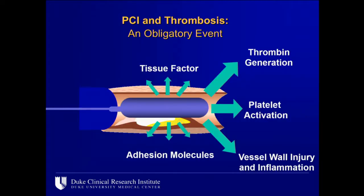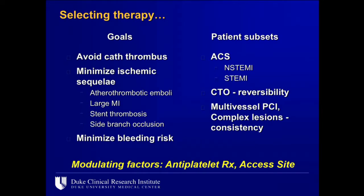The reason we need to worry about this is that what happens in the cath lab is iatrogenic plaque rupture. When you inflate the balloon and crack the plaque, there's thrombin generation, platelet activation, vessel wall injury, and inflammation. We treat vessel wall injury and inflammation with a stent. Platelet activation is addressed with P2Y12 inhibitors — inhibitors of platelet activation — while 2B3A inhibitors address platelet aggregation. And then there's thrombin generation. We use combination therapy in the cath lab.